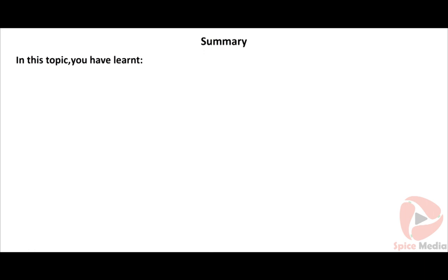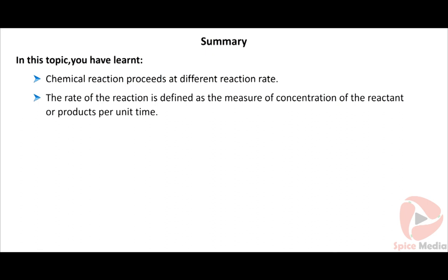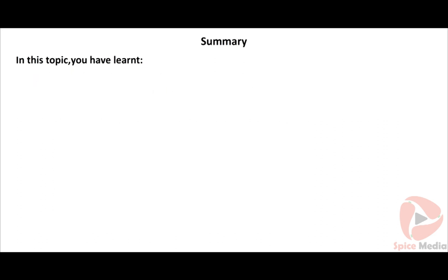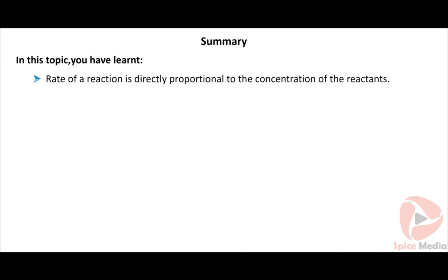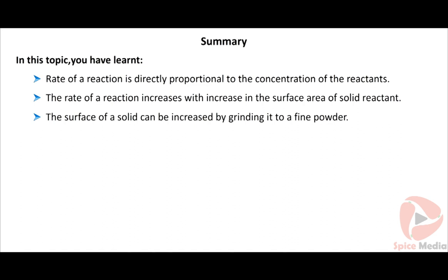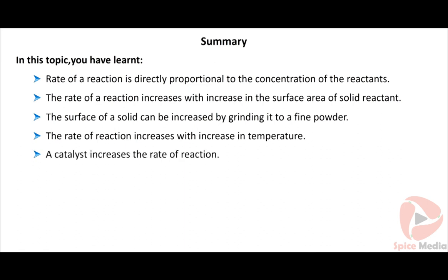Summary: Chemical reactions proceed at different reaction rates. The rate of the reaction is defined as the measure of the change in concentration of the reactants or products per unit time. There are 5 factors influencing the reaction rate: nature of the reactants, concentration of the reactants, surface area of the reactants, temperature, and catalyst. Ionic compounds react faster than covalent compounds. Rate of reaction is directly proportional to concentration and increases with greater surface area and higher temperature. A catalyst increases the rate of reaction.